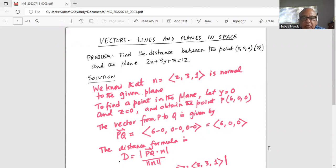To find a point in the plane, let y equal to 0 and let z equal to 0 and plug it in the equation for the plane. We will get x, 2x equal to 12, x is 6. So the point P coordinates are 6, 0, 0, which is on the given plane.